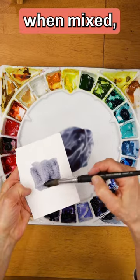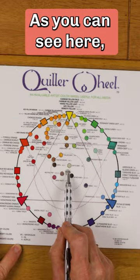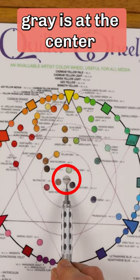And number two, when mixed, they will produce a neutral gray color. As you can see here, gray is at the center of the color wheel.